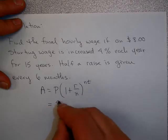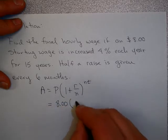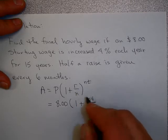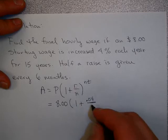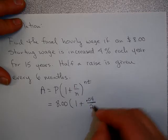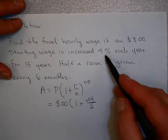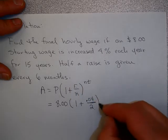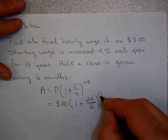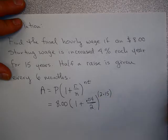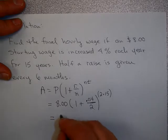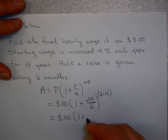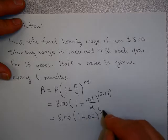I start with $8 as my beginning wage. My interest rate is 4%. Remember, interest rate is given yearly. And the number of times interest is calculated, or your increase in your wage is calculated, is 2 times a year, every 6 months. And that's going to be to the 2 times 15 years. If you were to stay in this job for 15 years, this ends up being this.